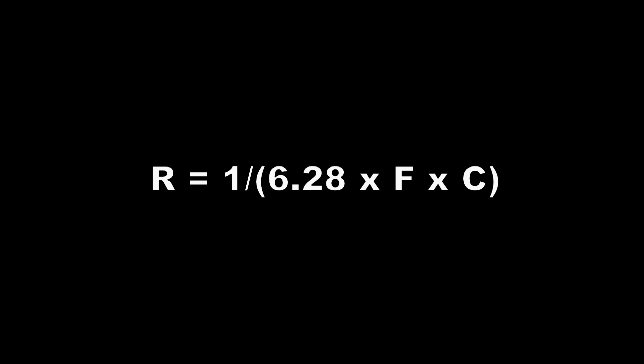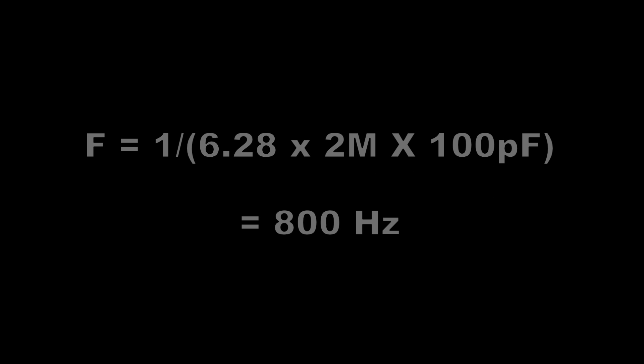But once you do the math, which is R equals 1 over 2 pi F C, where F is the highest audio frequency to be reproduced and C is the grid capacitor value, if you solve for F, you find out that with a 2 meg and a 100 picofarad capacitor, the audio cutoff actually starts at 800 hertz. And by 5k, 5 kilohertz, the signal will be down by 8 to 10 dB. Yes, this is audio distortion. It's a high cut, but it's not objectionable in simple low-fi radios or in TRF sets.